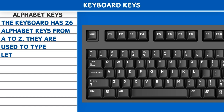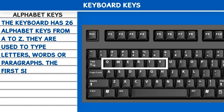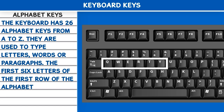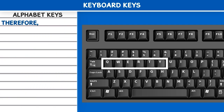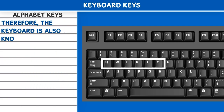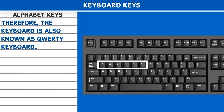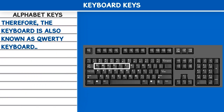Alphabet Keys. The keyboard has 26 alphabet keys from A to Z. They are used to type letters, words, or paragraphs. The first six letters of the first row of the alphabet keys are Q, W, E, R, T, Y. Therefore, the keyboard is also known as a QWERTY keyboard.